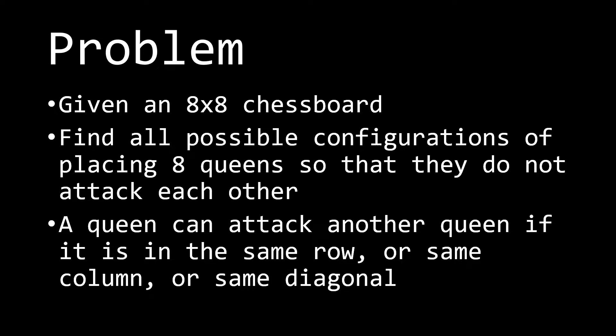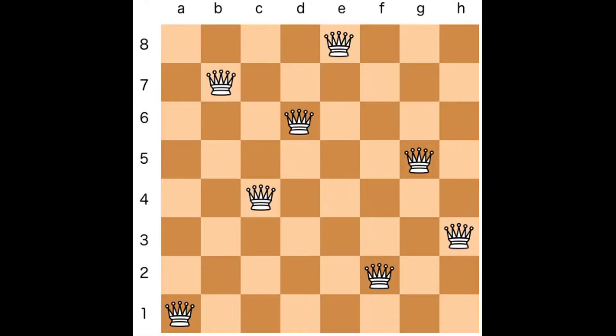Once again, we're given an 8x8 chessboard, and we just want to find a configuration of 8 queens — we put them on the board somewhere so that none of them attack each other. Here you can see a configuration that is valid. We have placed 8 queens on the chessboard and none of them attack each other. I'm going to be drawing the directions in which each one of them can move.